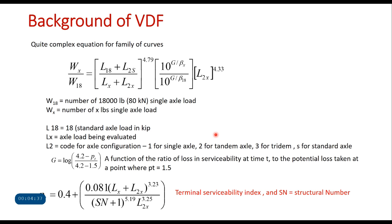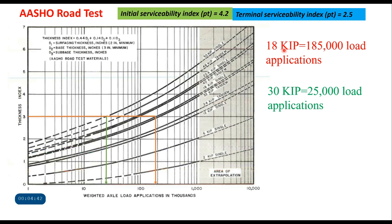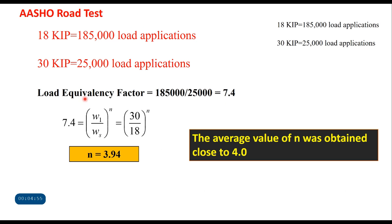Using the earlier example — an 18 kilo-pound axle load causes failure in 185,000 applications and a 30 kilo-pound axle load causes failure in 25,000 applications — the equivalency factor is 185,000 divided by 25,000, which equals 7.4. Now, if w_1 is 30 kilo-pound and w_s is the standard load of 18 kilo-pound, and their ratio is 7.4, then solving for the exponent n gives n = 3.94. Doing this for all ranges of load applications and all thickness indices, the average value of n was found to be close to 4.0.